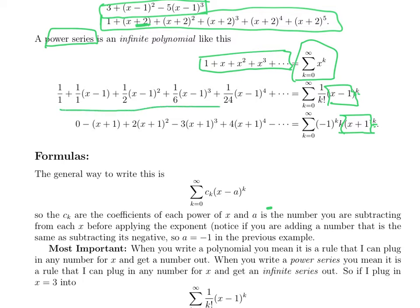So here we have 1 over k factorial times x minus 1 to the k. Each term looks like x minus 1 to a power divided by some number that you can figure out from the index. Here's minus 1 to the k times k times x plus 1 to the k. This is alternating, minus x plus 1 plus 2x plus 1 squared, and so on.